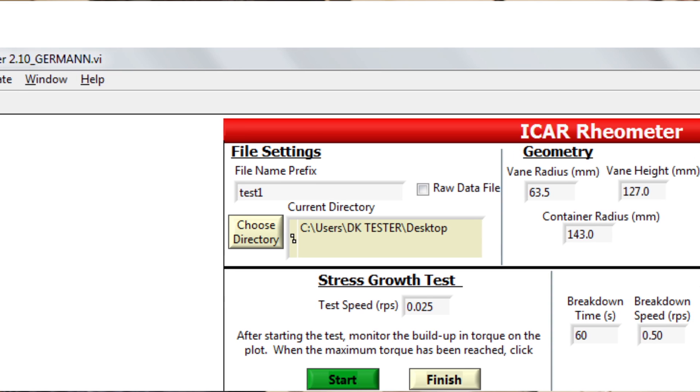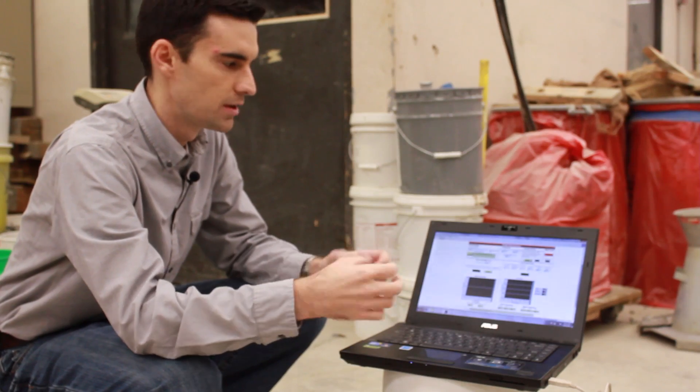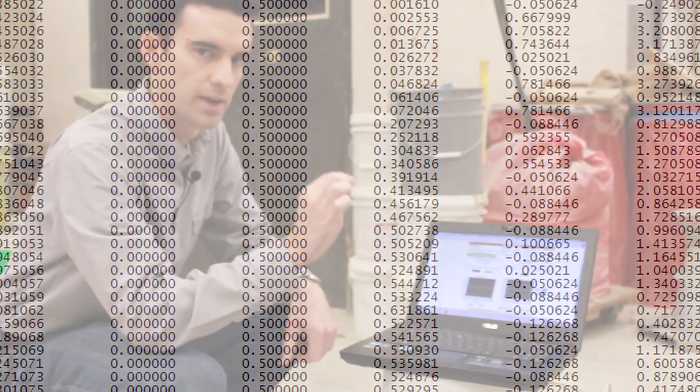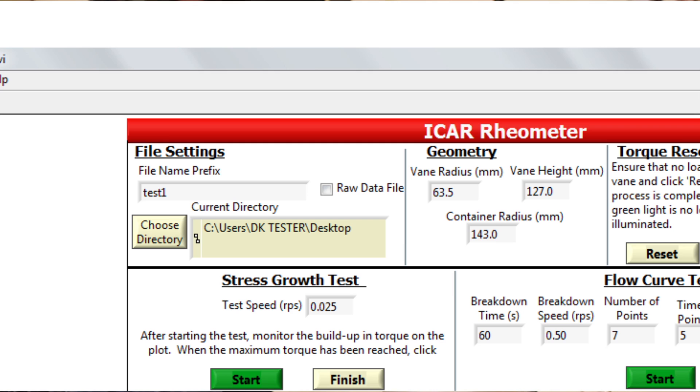We can then decide whether or not we want to report a raw data file. Every test automatically writes a summary file with all the information we need. The raw data file shows all of the raw torque and rotation speed data. We don't normally run that. We can run it if we need for diagnostics. Today we won't run that.